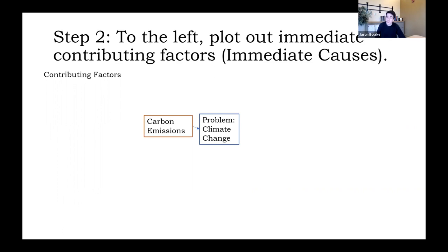So I should have my problem in the center of the paper and the immediate contributing factor directly to the left, with a little arrow pointing to the relationship. Arrows indicate the flow of impact — so carbon emissions lead to climate change.